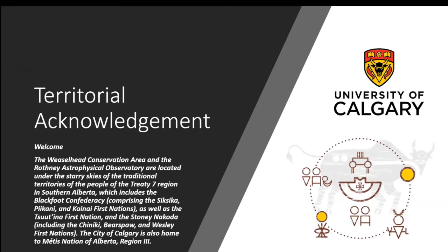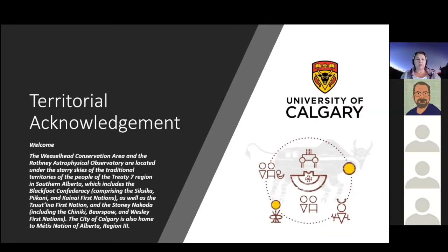The Weasel Head Conservation Area and the Rothney Astrophysical Observatory are located under the starry skies of the traditional territories of the people of the Treaty 7 region in southern Alberta, which includes the Blackfoot Confederacy comprising of the Siksika, Kainai, and Piikani First Nations, as well as the Tsuut'ina First Nation and the Stoney Nakoda, including Chiniki, Bearspaw, and Wesley First Nations. The City of Calgary is also home to Métis Nation of Alberta Region 3, of which I am a proud member.